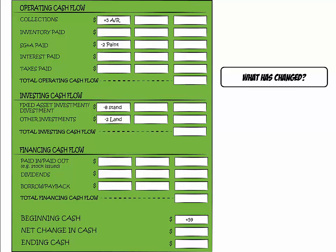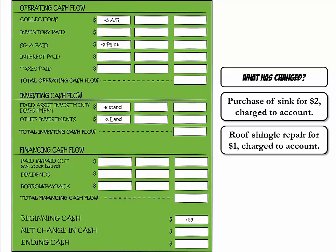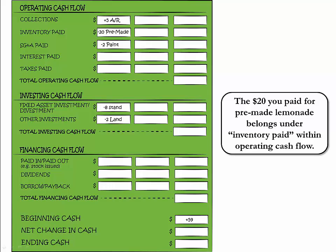Let's see how our latest transactions impact the cash flow statement. You purchased the sink for $2 charged to your account, so there was no cash involved — this transaction does not show up on the cash flow statement until you pay cash. The roof shingle repair was also not paid with cash, so it too would not show up now. You did pay $20 cash for the pre-made lemonade, so we add minus $20 under inventory paid.